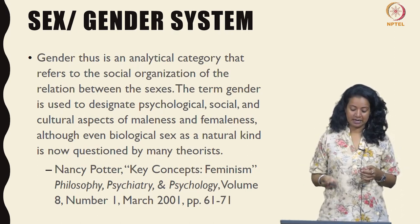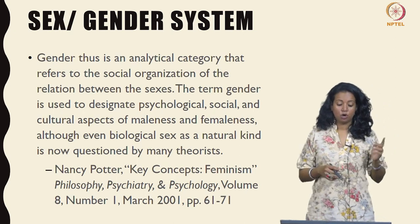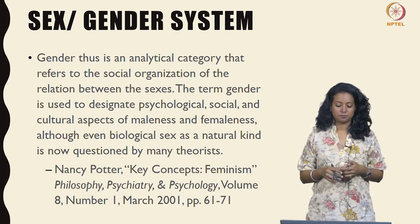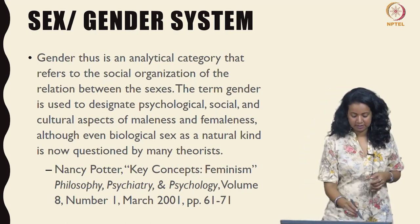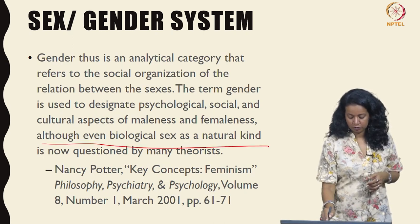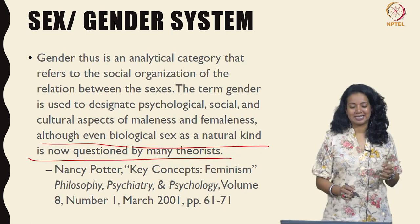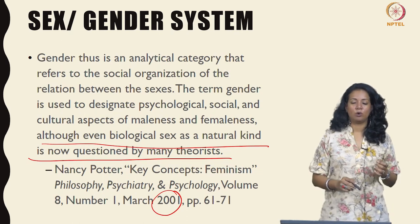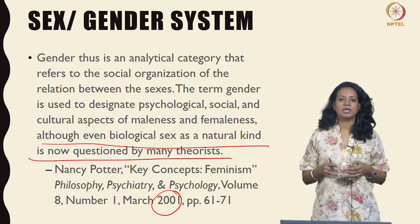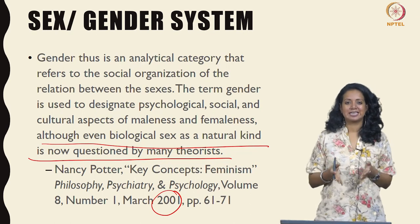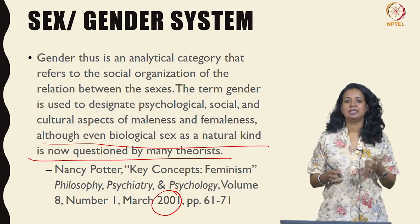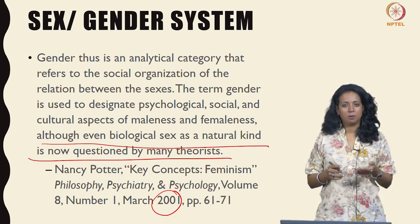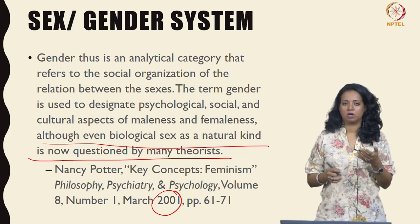Gender thus is an analytical category that refers to the social organization of the sexual relation between the sexes — used to designate psychological, social, and cultural aspects of maleness and femaleness. This is where Simone de Beauvoir also comes in, although even biological sex as a natural kind is now questioned by many theorists. In 1949, Simone de Beauvoir is not making an argument for biological sex being natural — she is suggesting that the very act of naming biological sex itself as male and female is tremendously arbitrary and already shot through with patriarchal power.